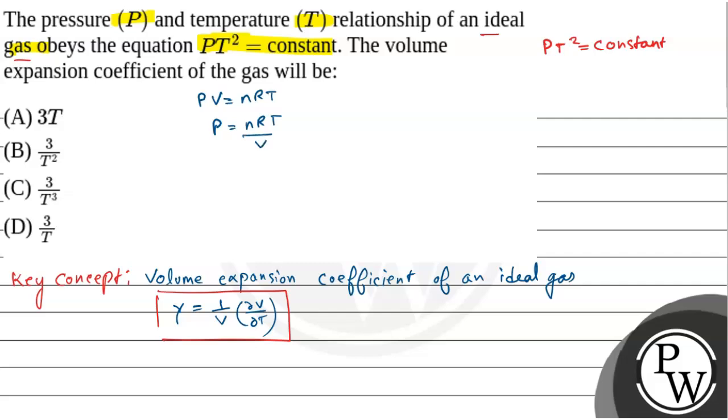That means nRT by V into T² equals constant. So from here you can say that T³ equals to some constant into V. So K is the constant.